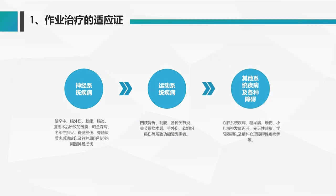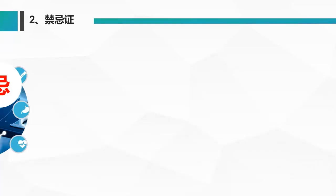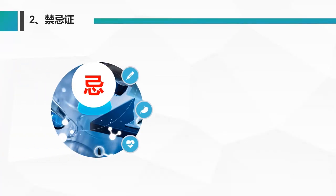其他系统的疾病，主要包括心肺系统的疾病、糖尿病、烧伤、小儿精神发育迟缓、先天性畸形、学习障碍，以及精神心理障碍等疾病。禁忌症，这些一定要注意。